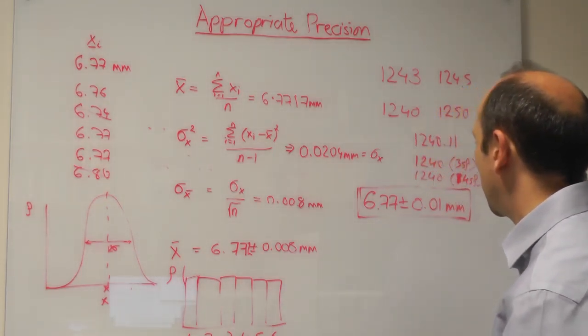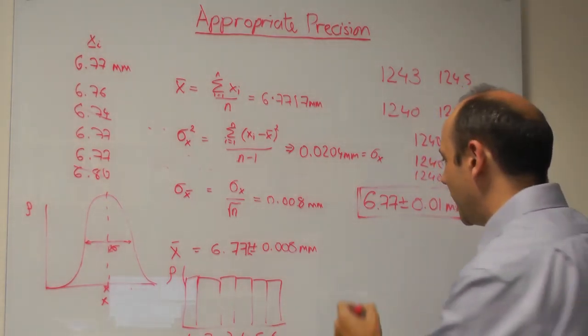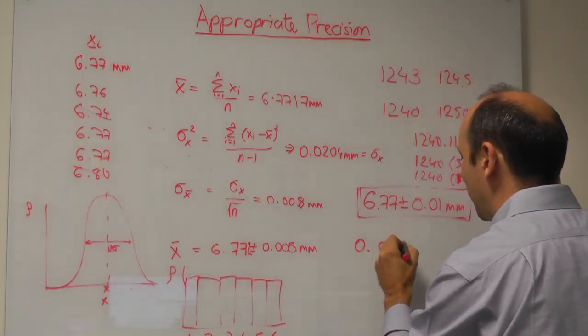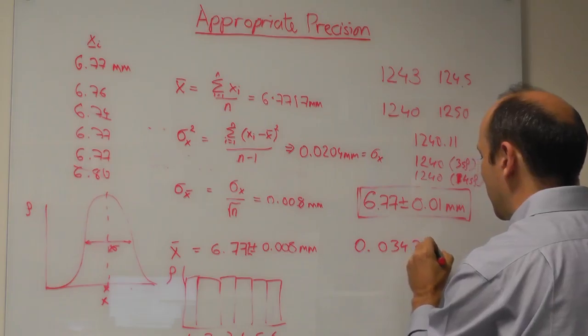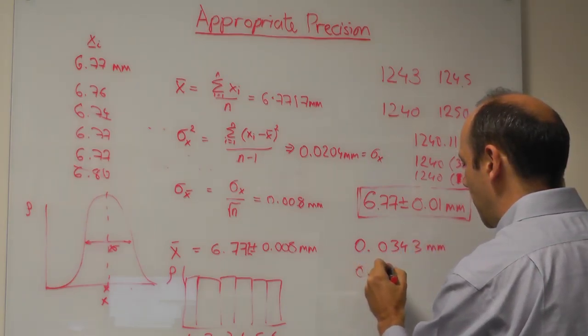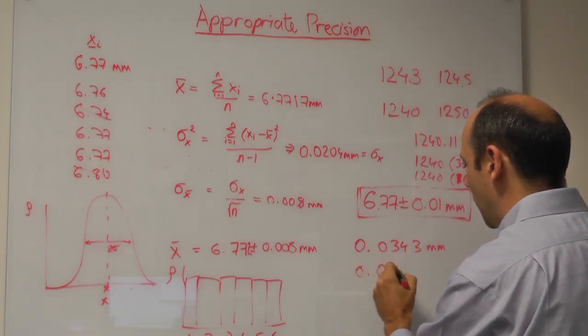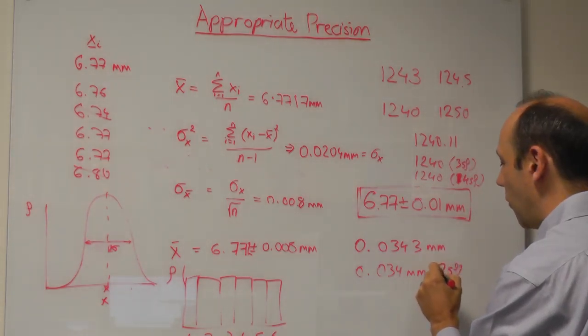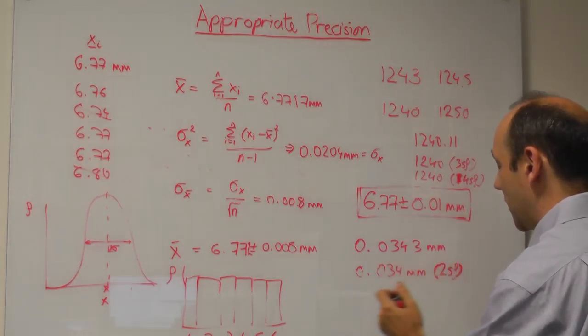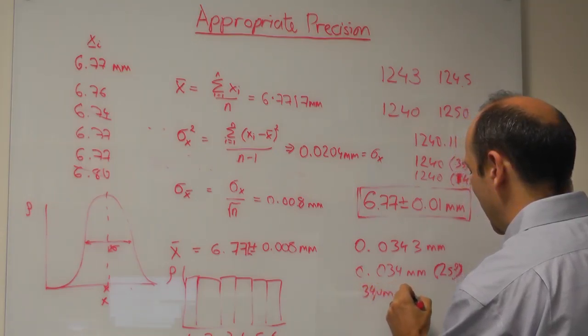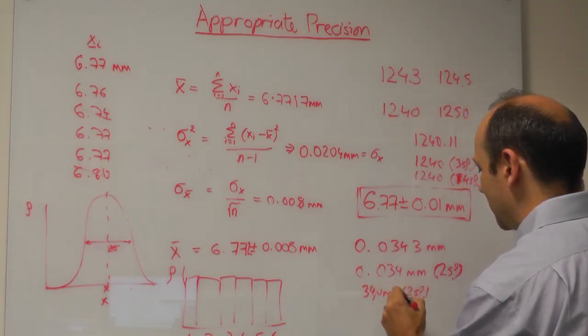There's one other thing to think about. Say I measured a diameter of something, a piece of sand say, and I measured that it was 0.0343 millimeters. To 2SF, that would be 0.034 millimeters. So we ignore the trailing zeros when we're talking about significant figures. Or we could say it was 34 micrometers to 2SF. It would be the same thing.